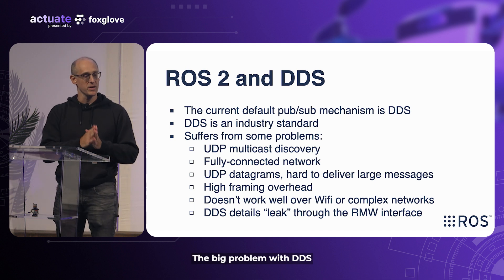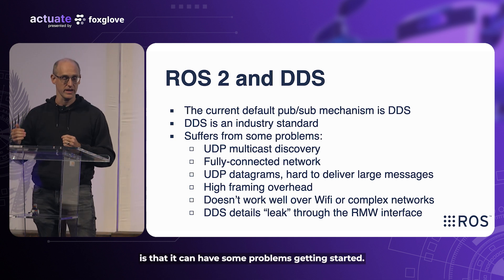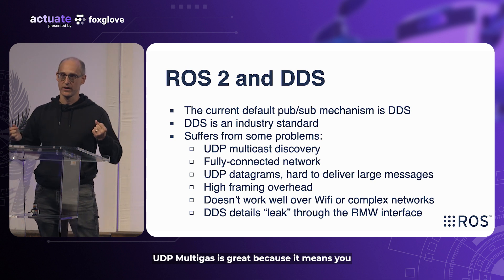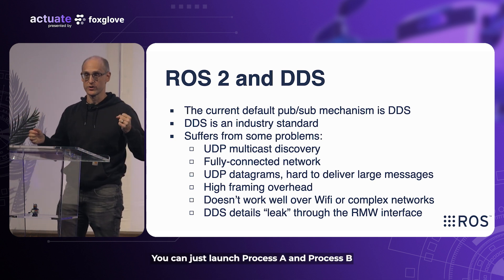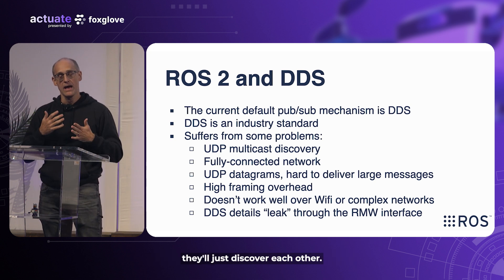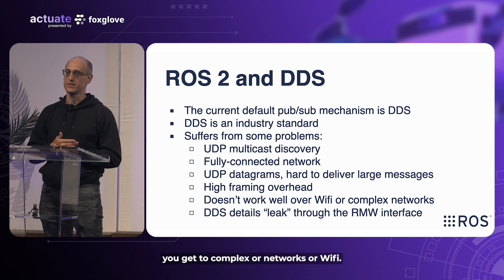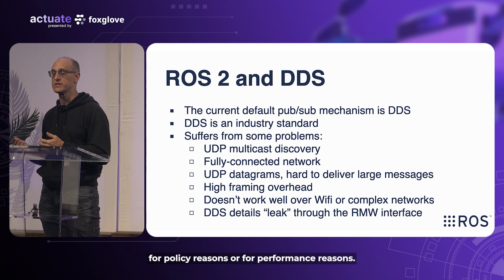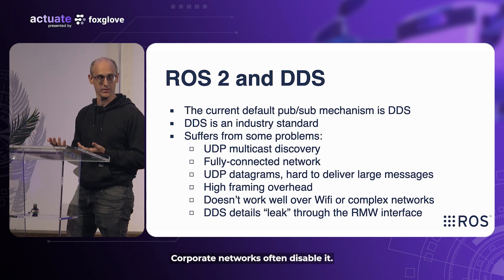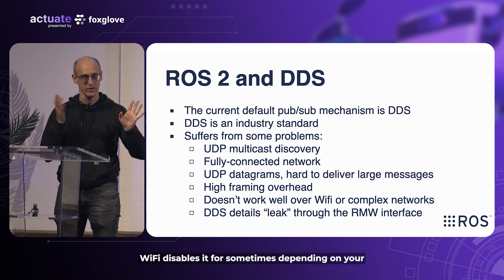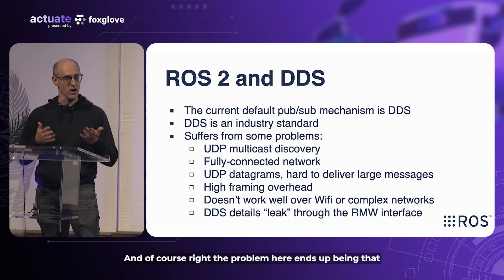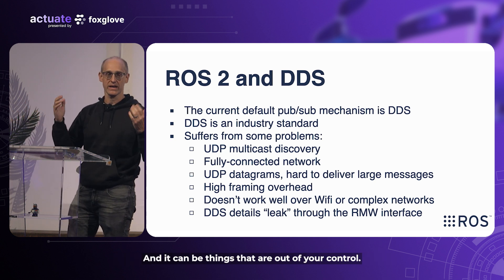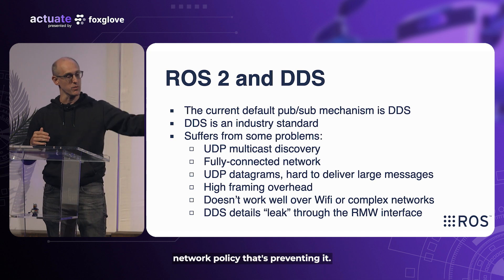However, the big problem with DDS is that it can have some problems getting started. First, DDS uses UDP multicast for discovery. UDP multicast is great because it means you don't have a central ROS core — you can just launch process A and process B and they'll discover each other. The problem comes with complex networks or Wi-Fi. Complex networks can have UDP multicast disabled for policy or performance reasons. Corporate networks often disable it. Wi-Fi can also disable it depending on your router. When it works it's great, but when it doesn't, your nodes just don't communicate and you don't know why — and it can be things out of your control, like network policy.